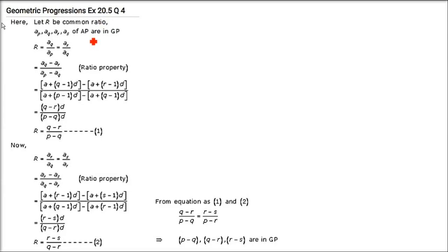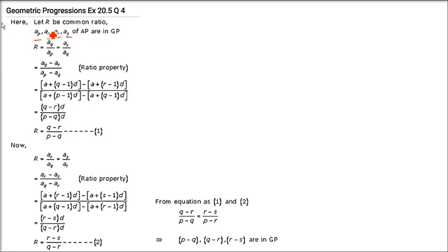If the Pth, Qth, Rth and Sth terms of an AP be in GP, then prove that P−Q, Q−R, R−S are in GP. This is an NCERT question. We know that A_P, A_Q, A_R and A_S are AP terms but they are in GP. GP means A_Q/A_P = A_R/A_Q = A_S/A_R.